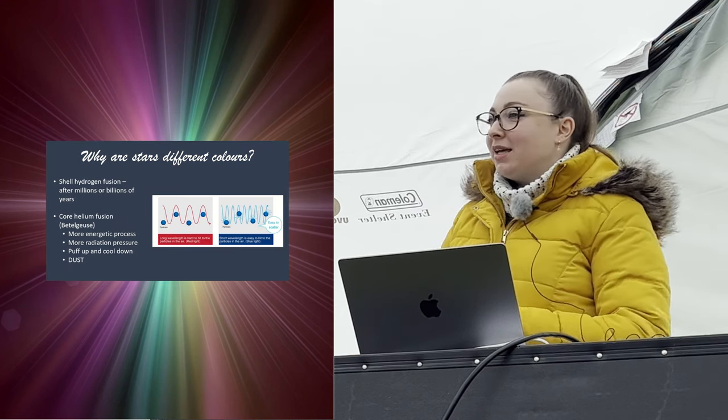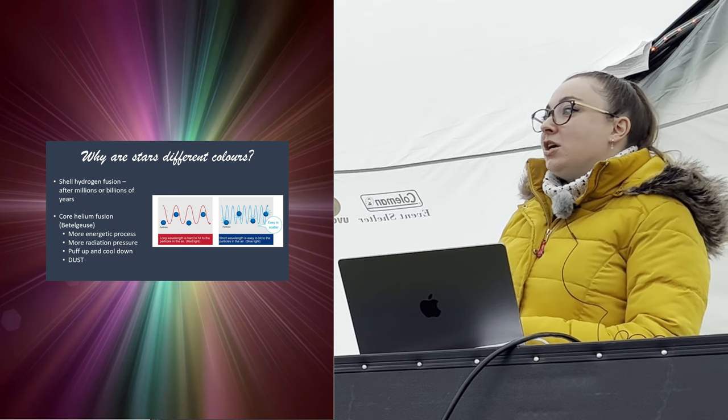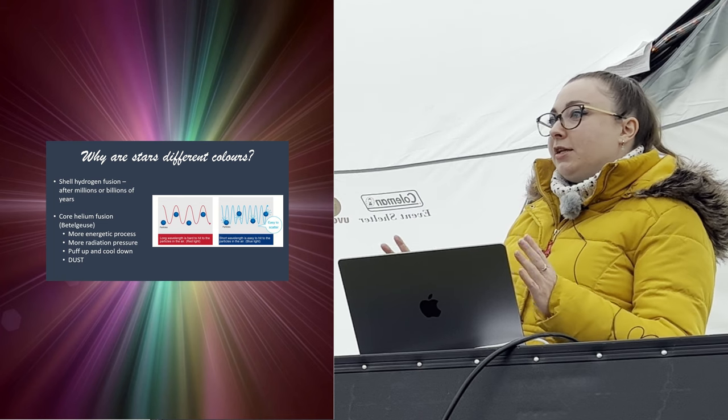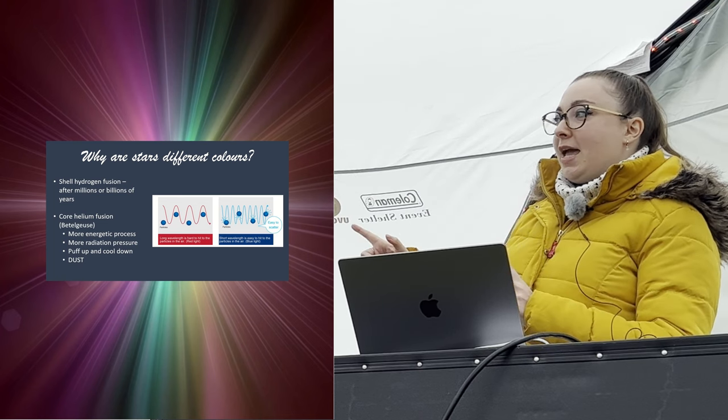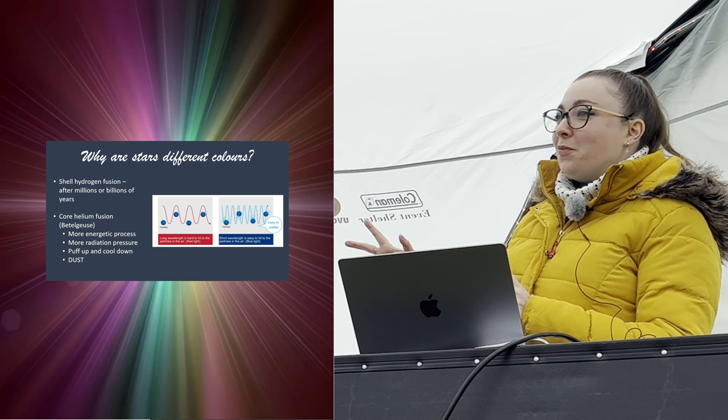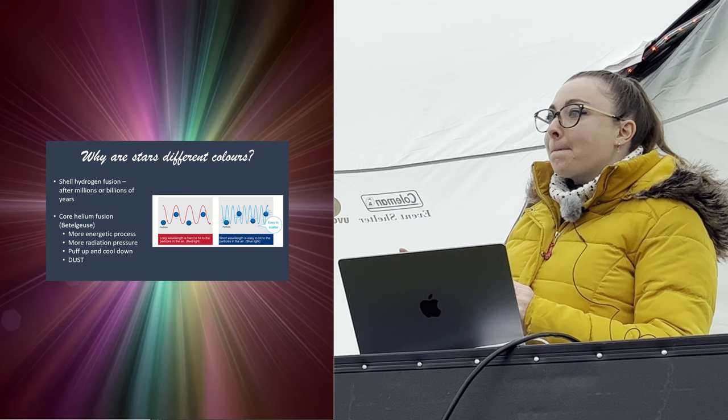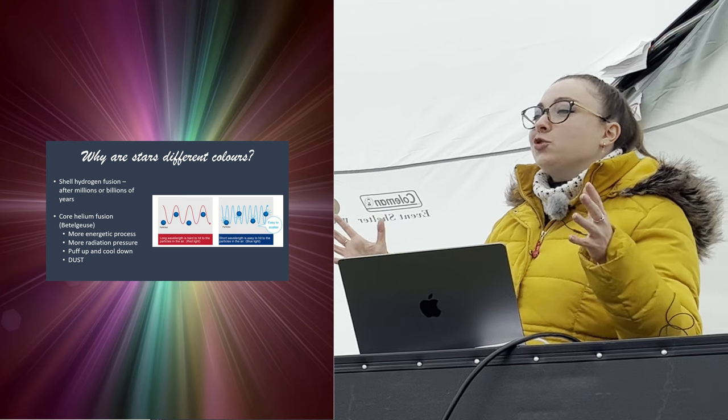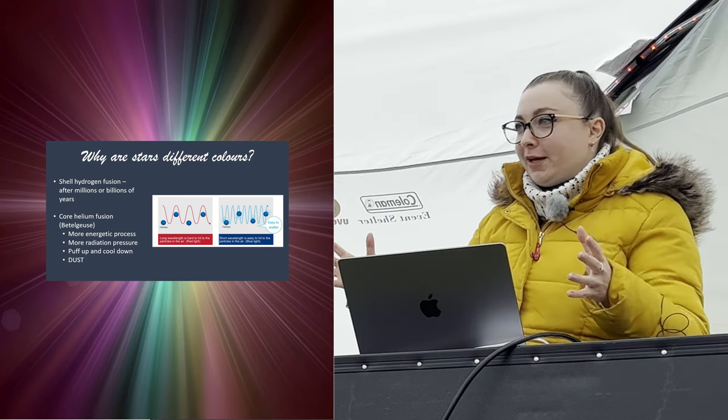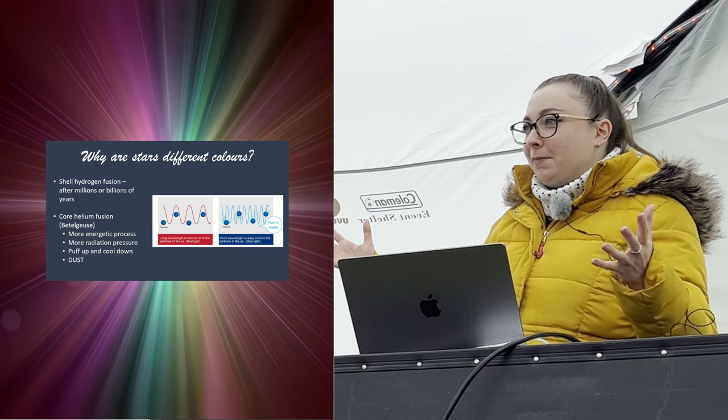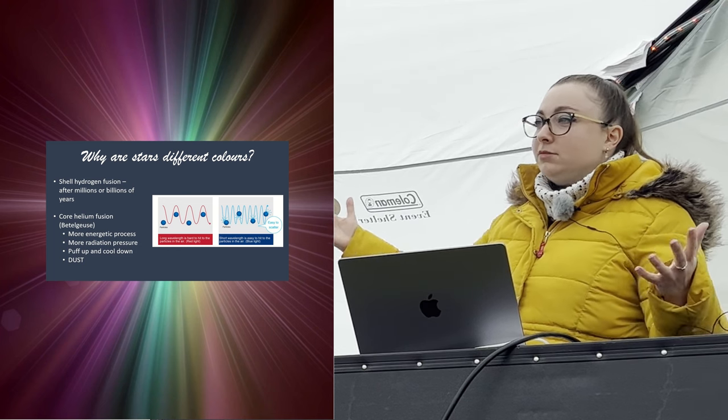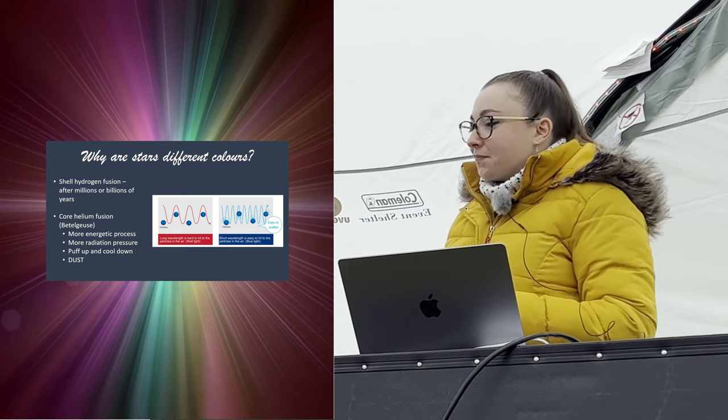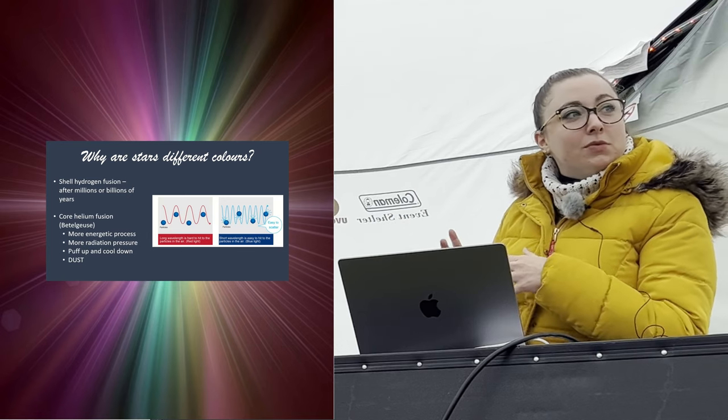Question: How big would Betelgeuse have been when it was on the main sequence? So it would be bigger than the sun because it's more massive, but at the minute it's extended out to, well it's debated, somewhere between Mars and Jupiter. But when it was on the main sequence, it would have been similar to the sun. It wouldn't have been like the size up to Mercury's radius. It would have been bigger, I'm not sure how much bigger, but not so much bigger than the sun, reasonably big because it's 11 times the mass, but not this enormous puffed up giant that it is now.